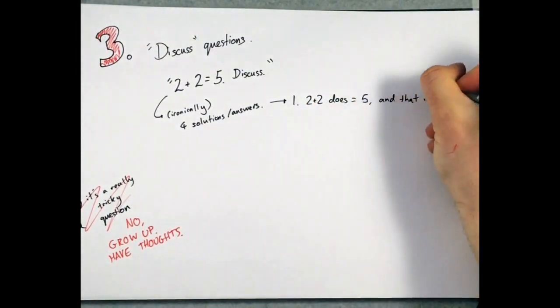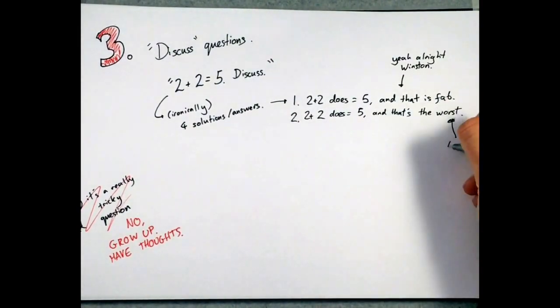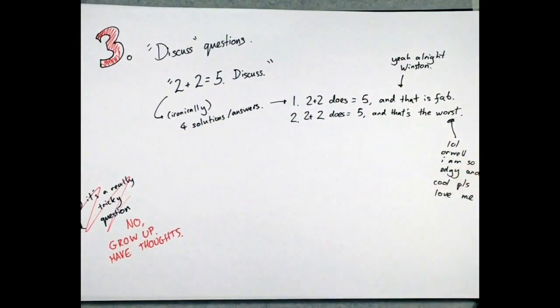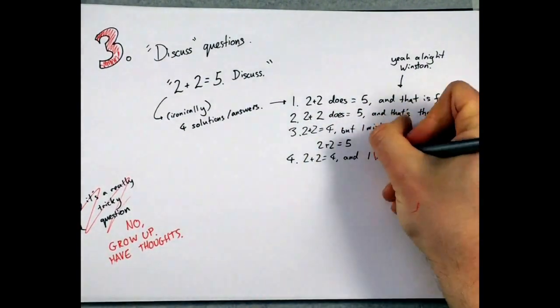So the four options for this kind of question are essentially, one, this is true, and that's great. Two, this is true, and that's awful. Three, this isn't true, and it should be true. Or four, this isn't true, and that's fine.